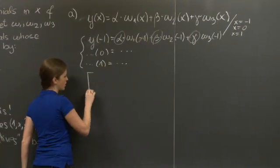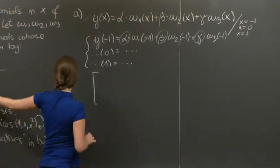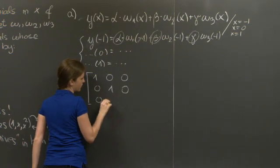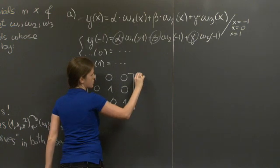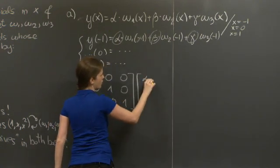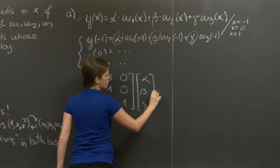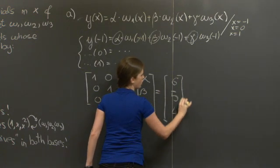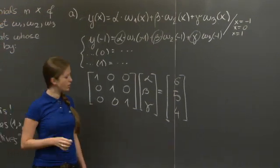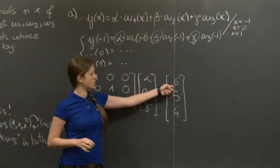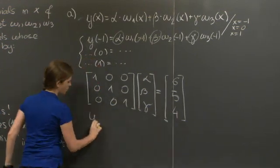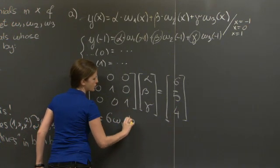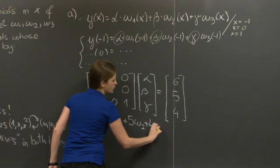If you write this in a matrix and read off coefficients from there, you get the following system. So this is the matrix of the system read off from here. These are the unknowns. And these are the values of the right-hand side. And I hope you'll agree that this is a very easy system to solve. We just get alpha is 6, beta is 5, and gamma is 4. So the solution to the first part is y equals 6w1 plus 5w2 plus 4w3.